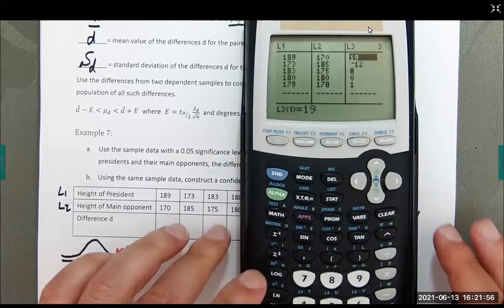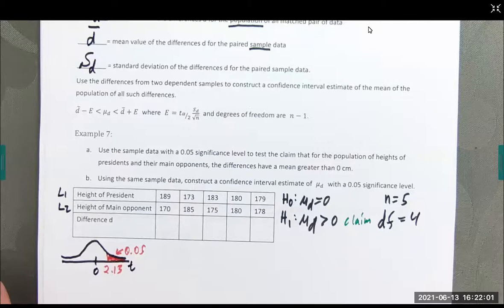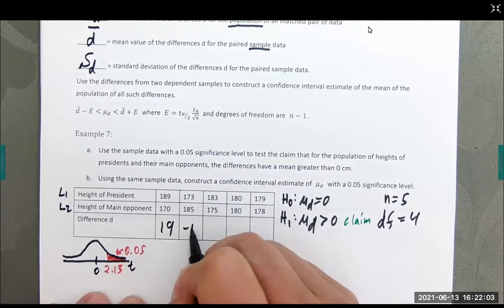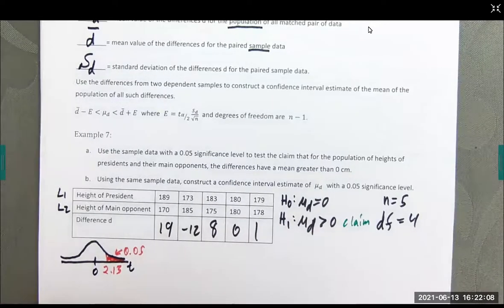And there they are. Look at that, it gives us all these differences for us. And remember, they're in list three now. So, this is 19, negative 12, 8, 0 and 1. And again, this is in list three for me.